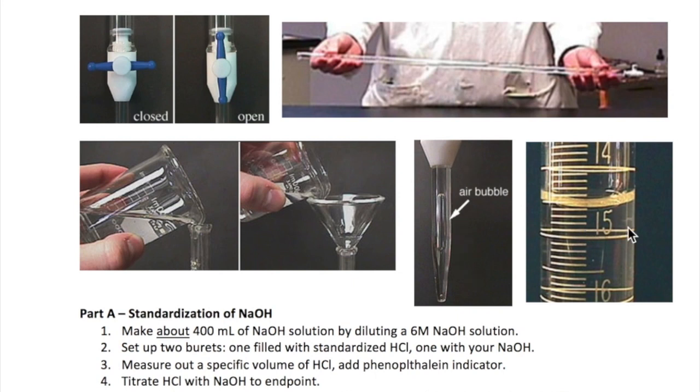Lastly, remember how to read the burette. For example, the liquid level shown in this picture corresponds to 14.58 milliliters. You don't need to subtract 50 milliliters from this number, as some students like to do.